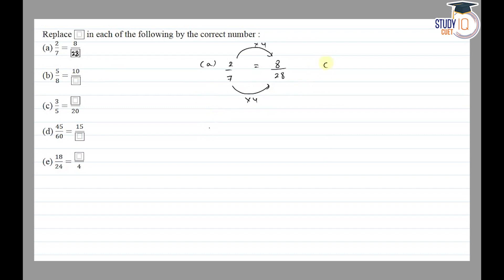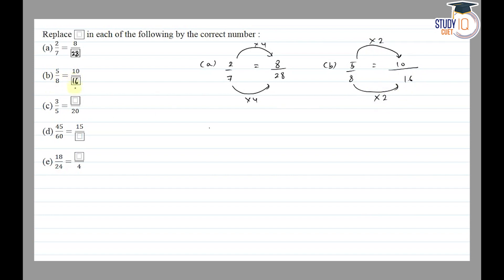Part B: 5/8 = 10/☐. We look at the numerator relationship: 5 × 2 = 10. To get an equivalent fraction, we multiply the denominator by the same number: 8 × 2 = 16. So the answer is 16.